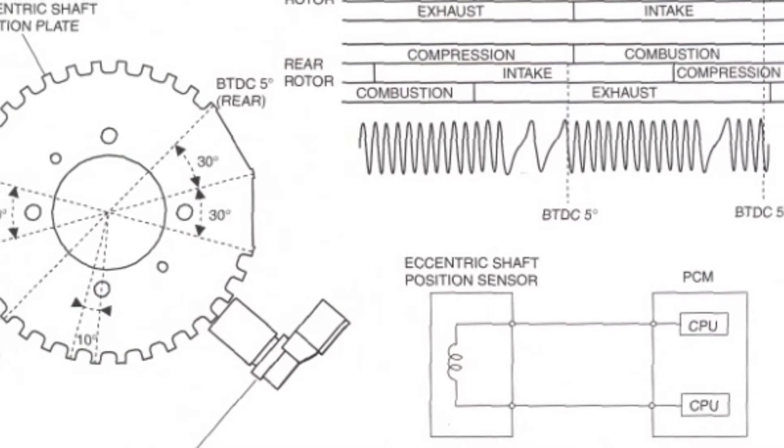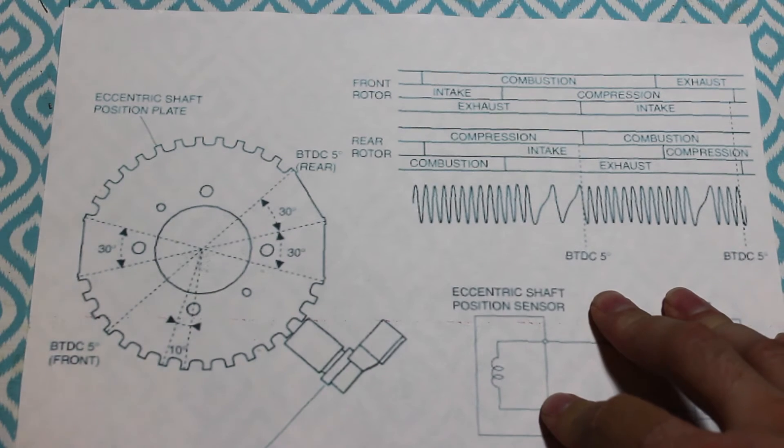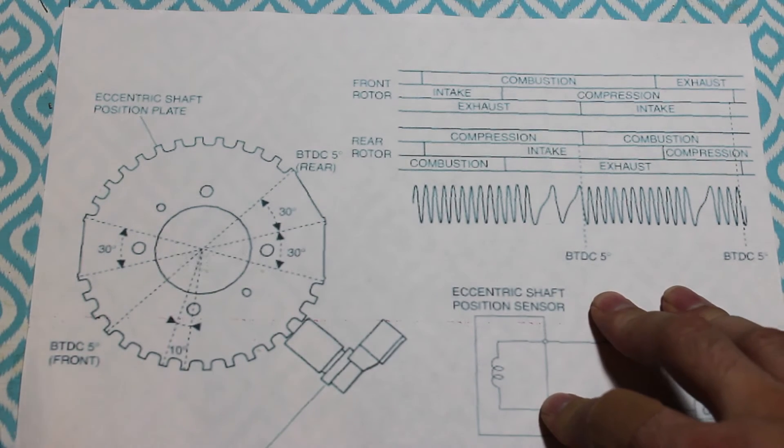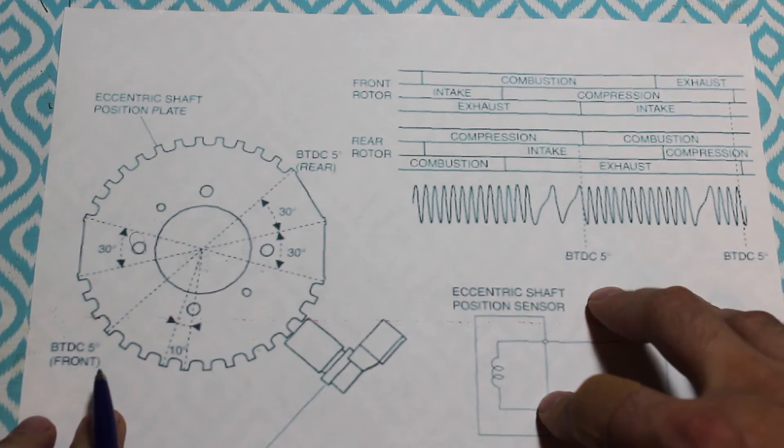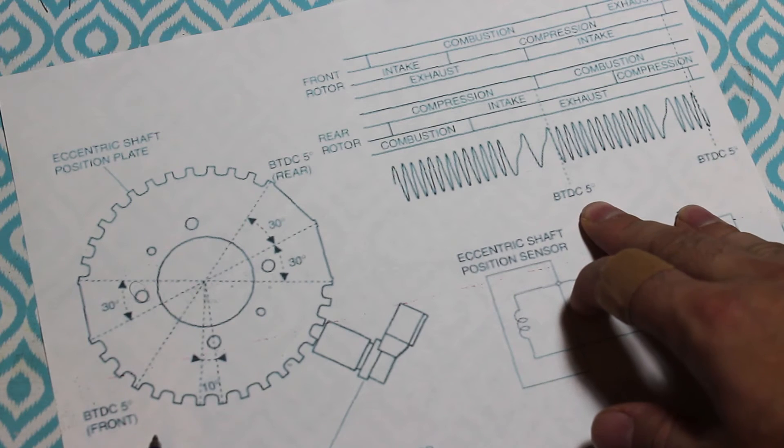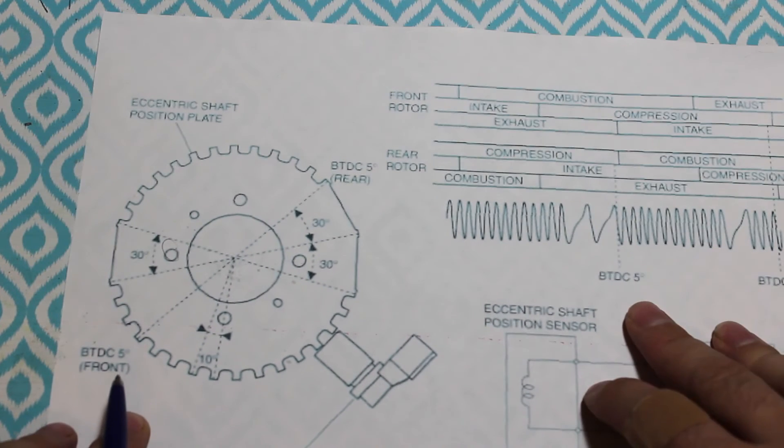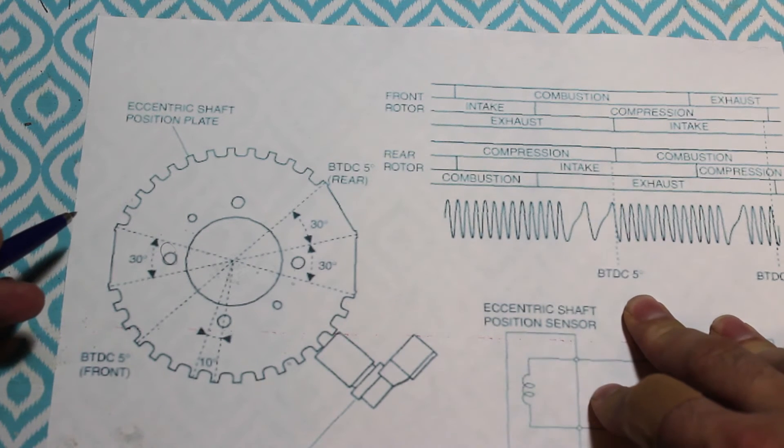Now why would I want to do this? Well, let's say you want to advance or retard timing without programming the ECU. Well you could make the holes in the eccentric shaft plate bigger, and then move it a few degrees one way or the other. It's almost the same as twisting a distributor. I could intercept the eccentric shaft position signal and then generate my own with advance or retard on the fly.